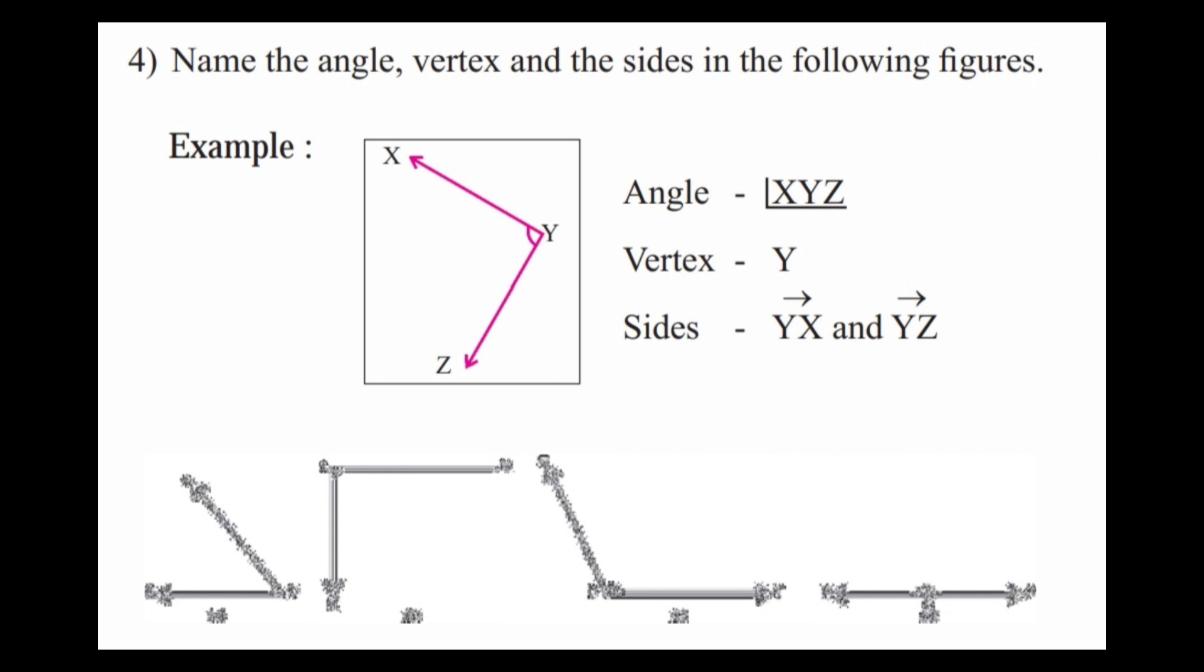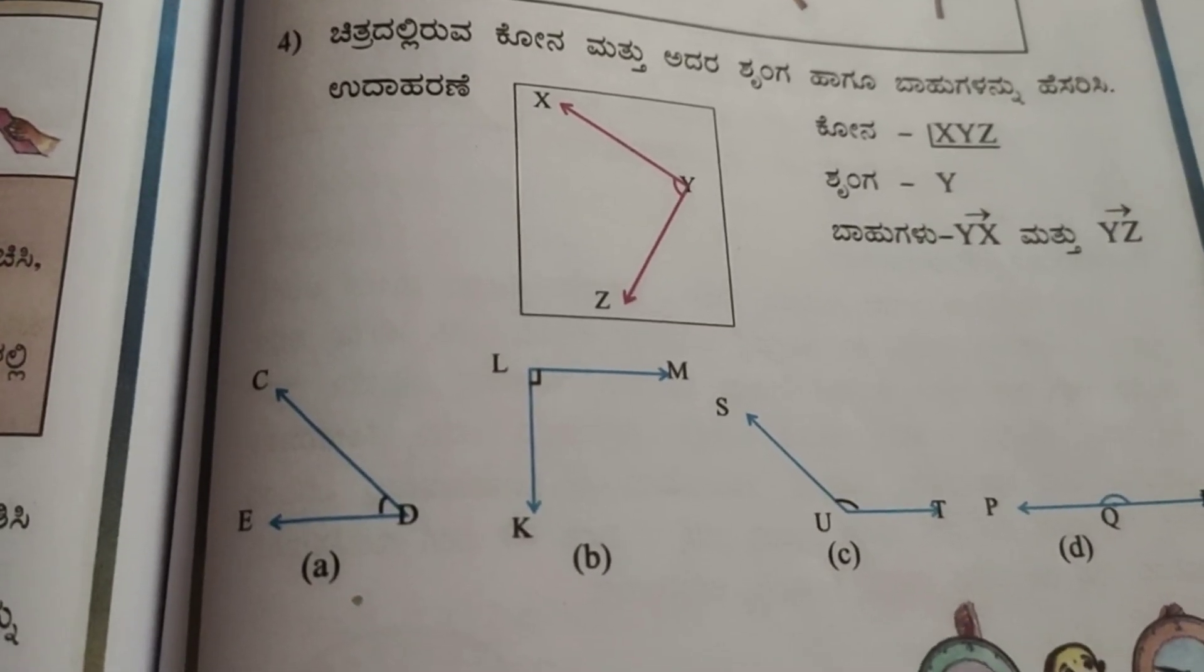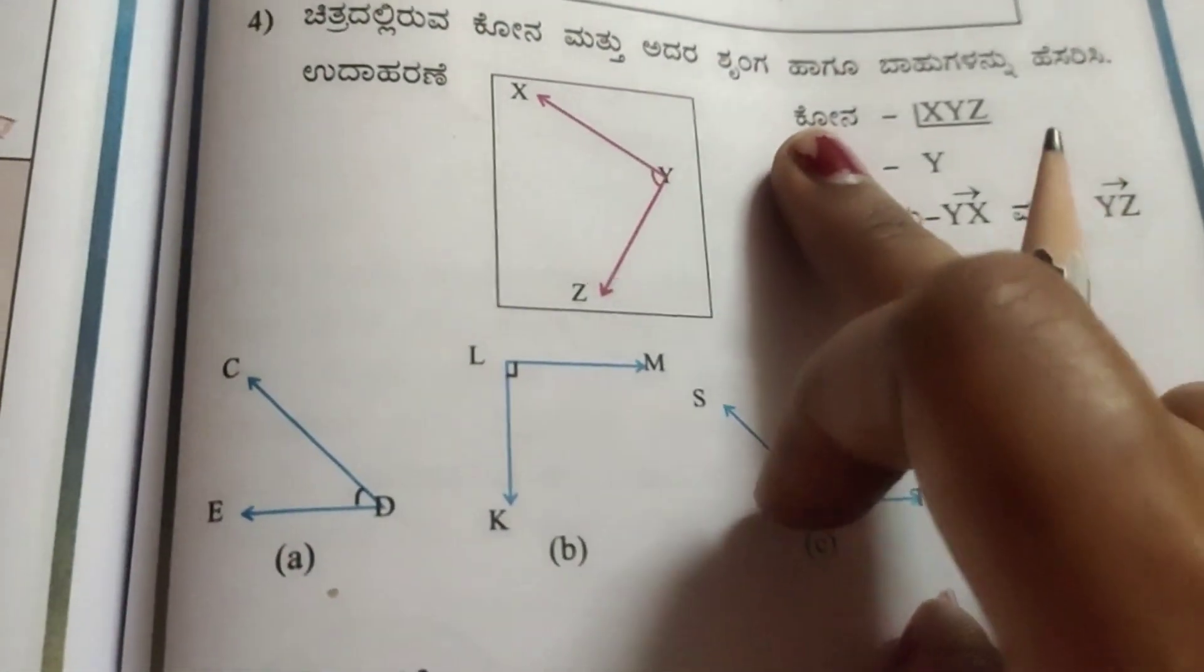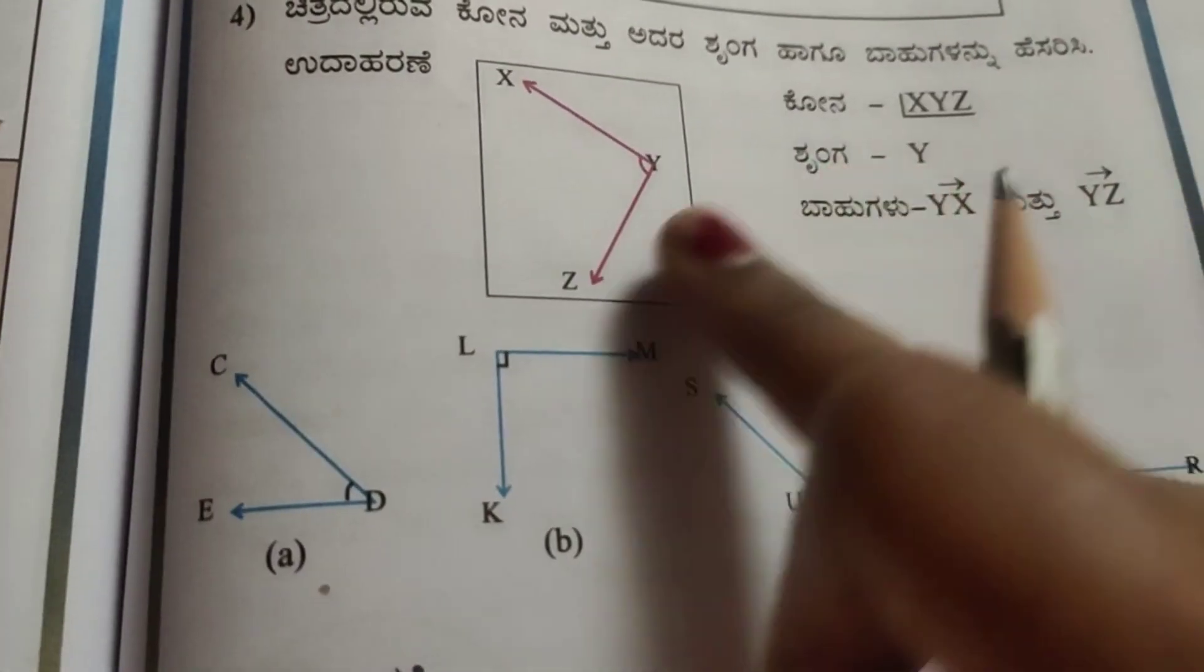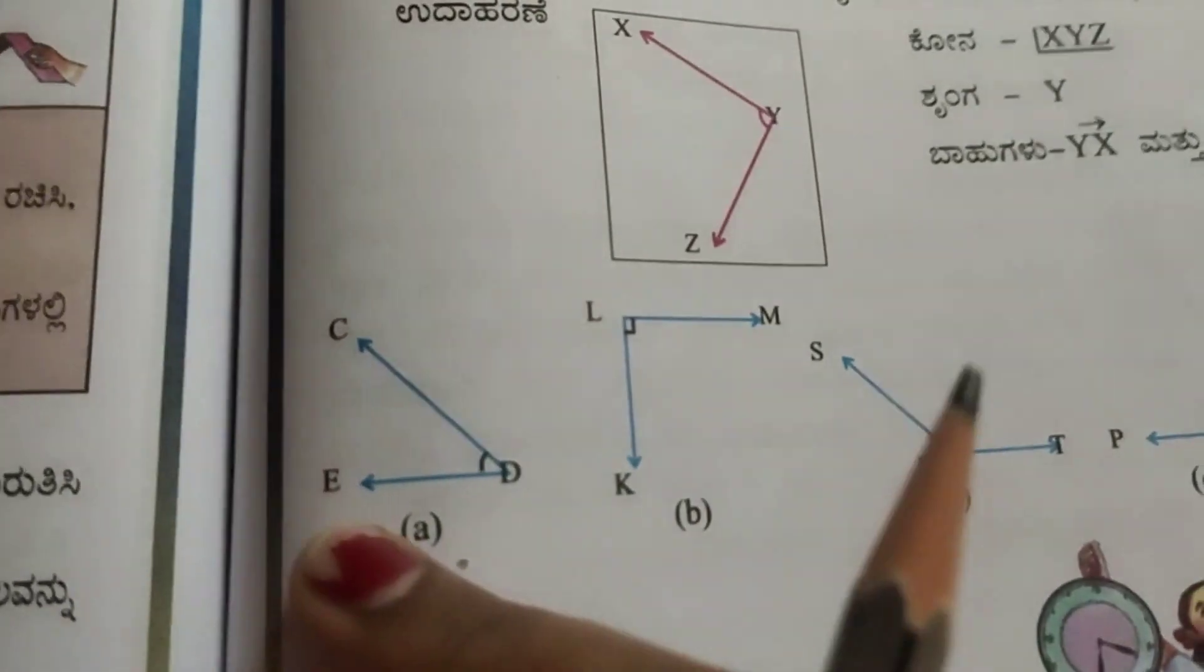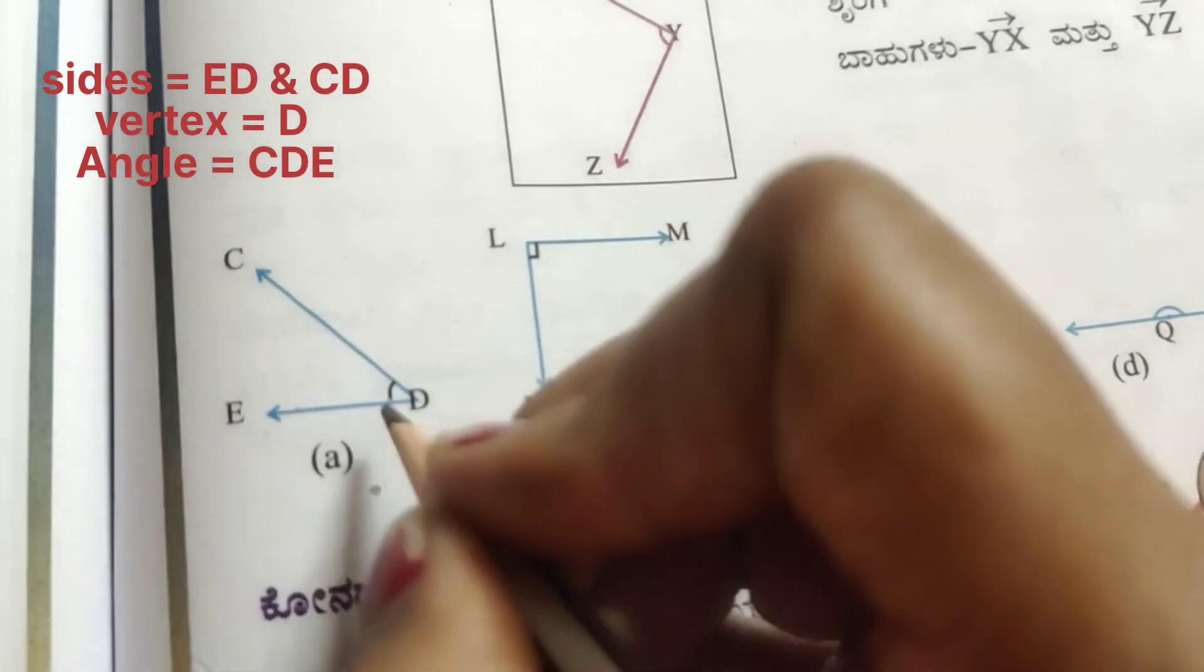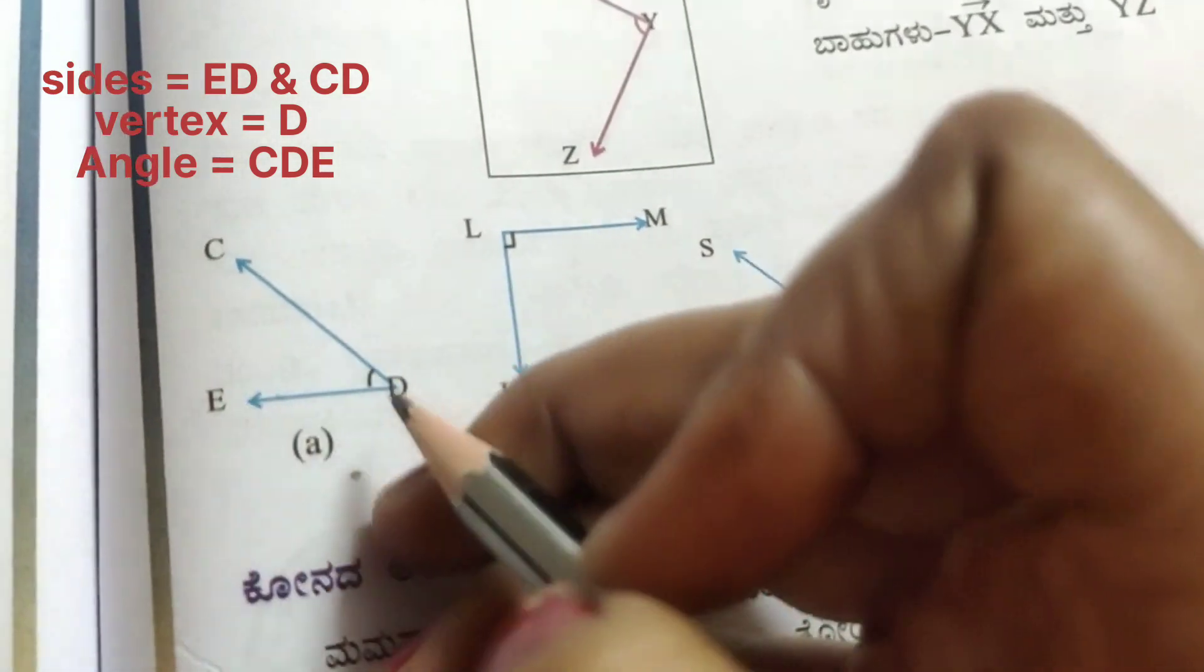Fourth question. Name the angle, vertex and the sides in the following figures. See the example XYZ. In XYZ, the angle is XYZ and the vertex is Y. Sides are YX and YZ. In CDE, the angle is CDE. Sides are CD and ED and the vertex is D. So in the next figure, MLK is the angle, LM and LK is the side and L is the vertex.